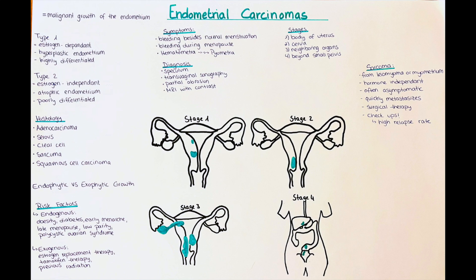The growth of the tumor can also be divided into two different types: it can either grow endophytically or exophytically. Endophytic growth means that the tumor growth is directed into the structure of the organ — in this case, the cancer grows into the tissue of the uterus towards the myometrium. In an exophytic growth, the cancer grows towards the cavity of the uterus.